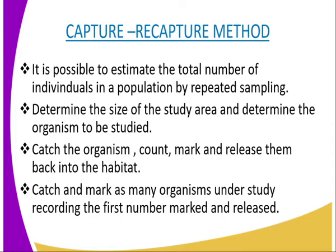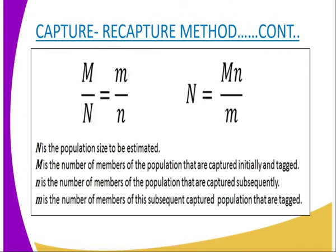After 24 hours, re-examine the experimental area and collect as many organisms as possible, including those that show the painted marks. Record the number of organisms collected. In the formula: capital M is the number of members of the population captured initially and tagged; capital N is the population size to be estimated, that is the total population; small n is the number of members of the population captured subsequently; and small m is the number of members of the subsequent captured population that are tagged.